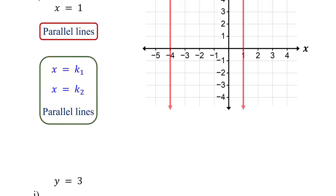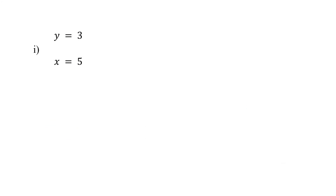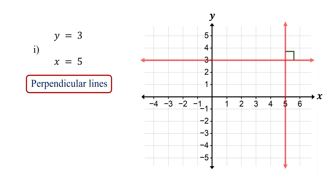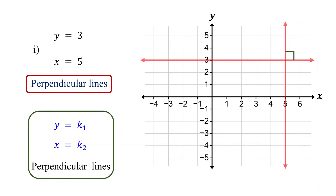But what happens when we have a mix of horizontal and vertical lines? Are these lines parallel or perpendicular? y equals 3 is a horizontal line crossing the y-axis at 3, while x equals 5 is a vertical line crossing the x-axis at 5. As you can see, they are perpendicular lines. In general, if one equation is in the form y equals a constant and the other is in the form x equals a constant, the lines are perpendicular. Vertical and horizontal lines are always perpendicular to each other.